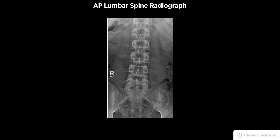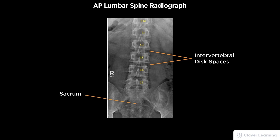A diagnostic AP lumbar spine radiograph must be free of motion and rotation, demonstrated anatomy to include the open intervertebral disc spaces, visualization of five lumbar vertebrae to include T12 and sacrum, and spinous processes centered to the bodies with proper visualization.